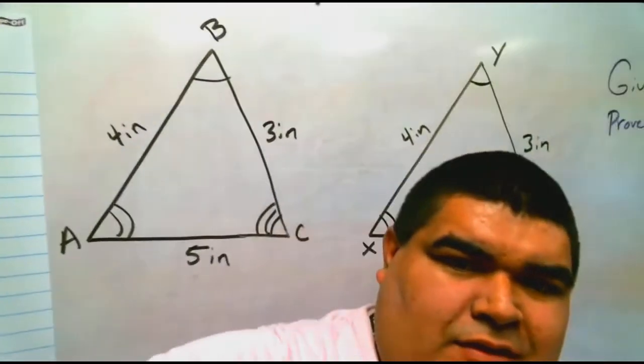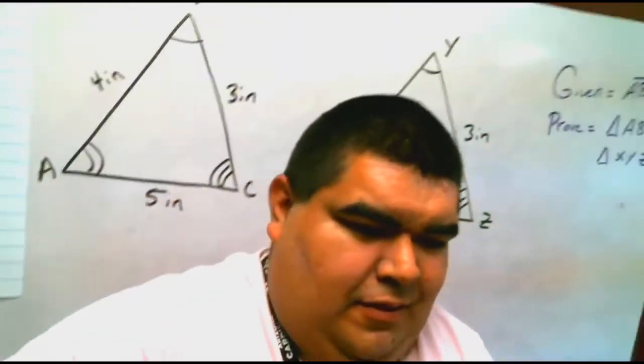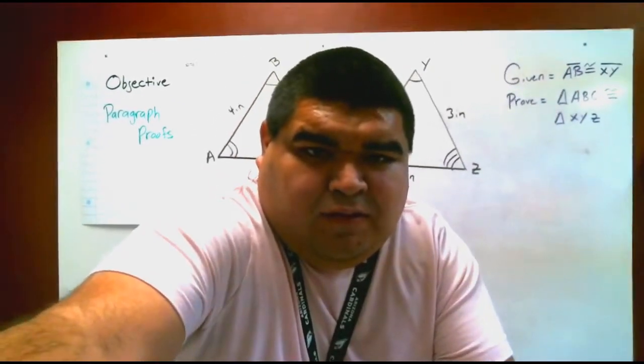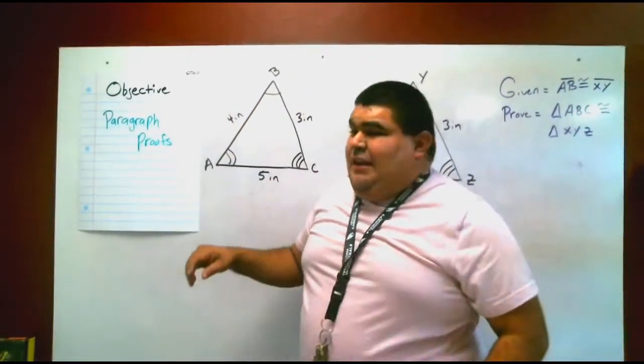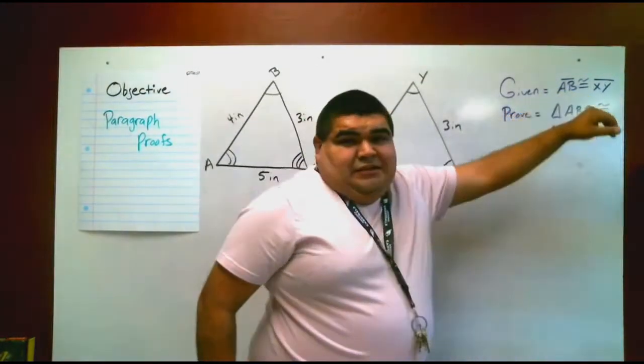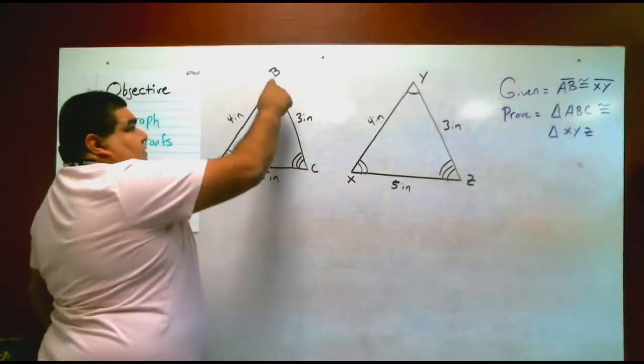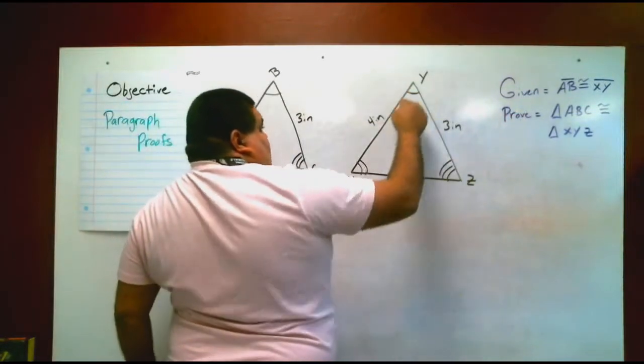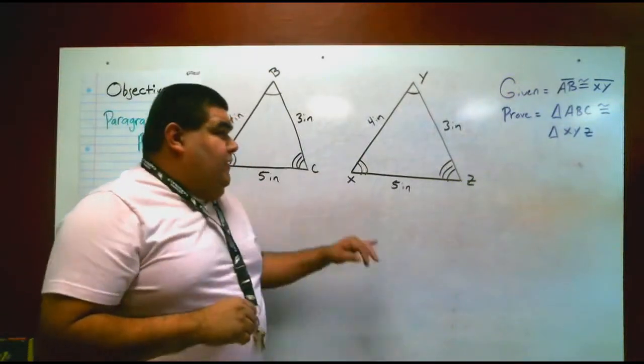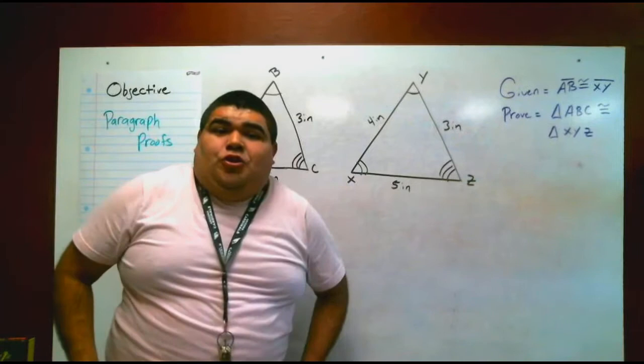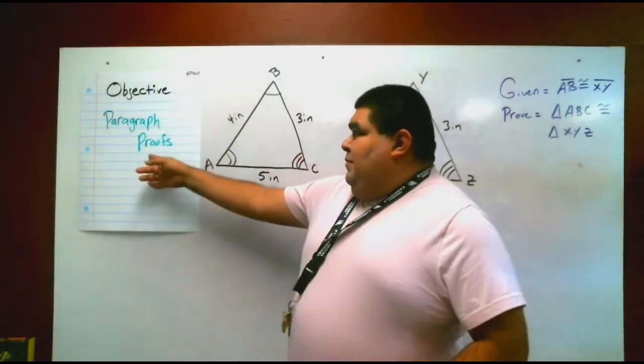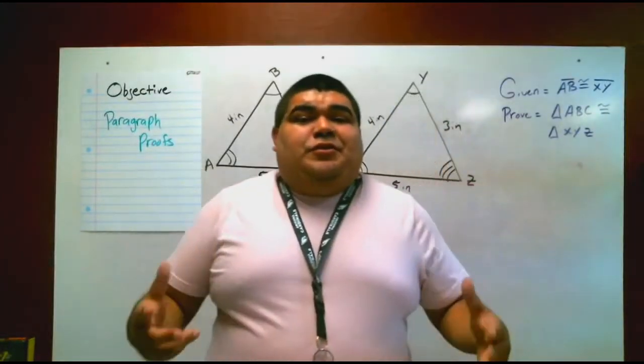All right, now that you guys have the triangles, it is given that segment AB is congruent to segment XY. So we have to prove that these two triangles are congruent.